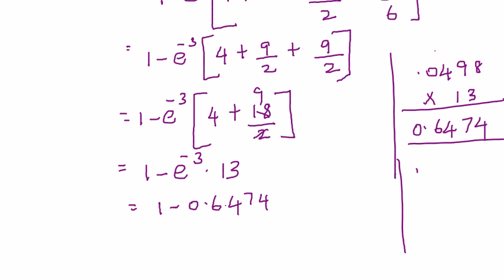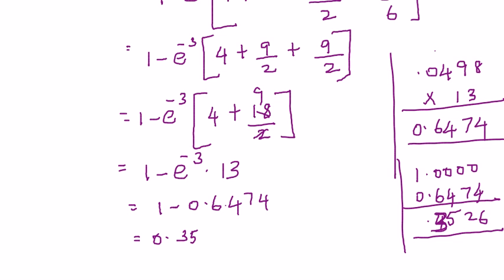Again, you subtract this. So, you will get the answer as 6, 2, 5, again, a 4. I'm sorry, 3, right. So, it is 0.3526.